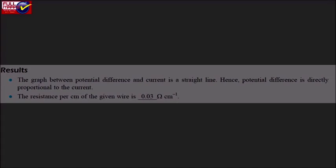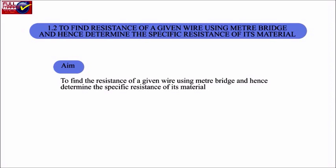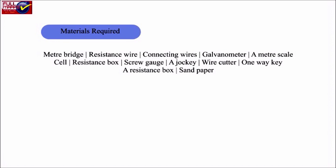Experiment 1.2: To find resistance of a given wire using a meter bridge and hence determine the specific resistance of its material. Materials required: meter bridge, resistance wire, connecting wires, galvanometer, a meter scale, cell, resistance box, screw gauge, a jockey, wire cutter, one-way key, and sandpaper.